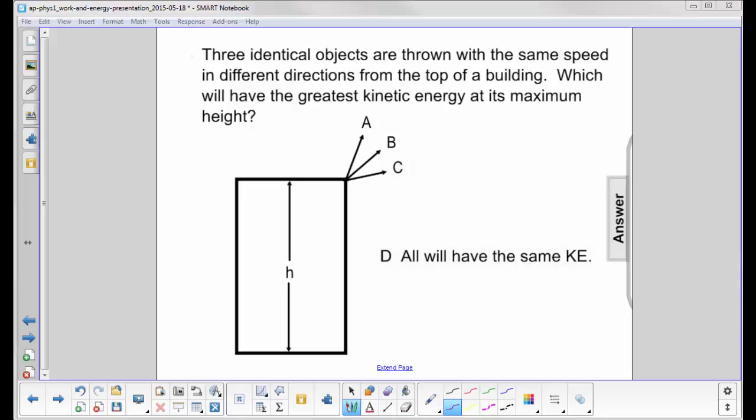Three identical objects are thrown with the same speed in different directions from the top of a building. Which will have the greatest kinetic energy at its maximum height?